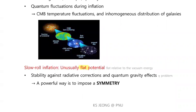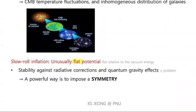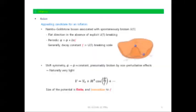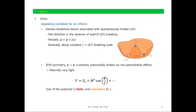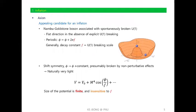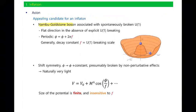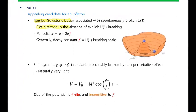A flat potential means we need flatness relative to the vacuum energy density. We know that there are many corrections like radiative corrections and quantum gravity effects, so it is non-trivial to maintain the flatness of the potential. A powerful way to maintain flatness is to impose a symmetry. An axion is an appealing candidate for the inflaton. An axion is a Nambu-Goldstone boson associated with the spontaneously broken U(1) symmetry, so it is a flat direction in the absence of explicit U(1) breaking, and it is periodic with periodicity determined by the decay constant.